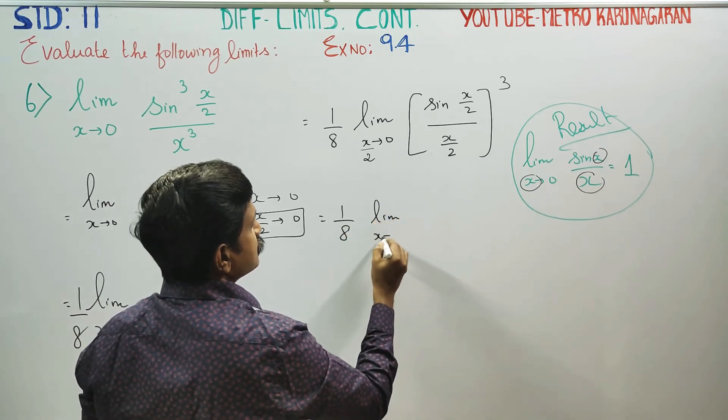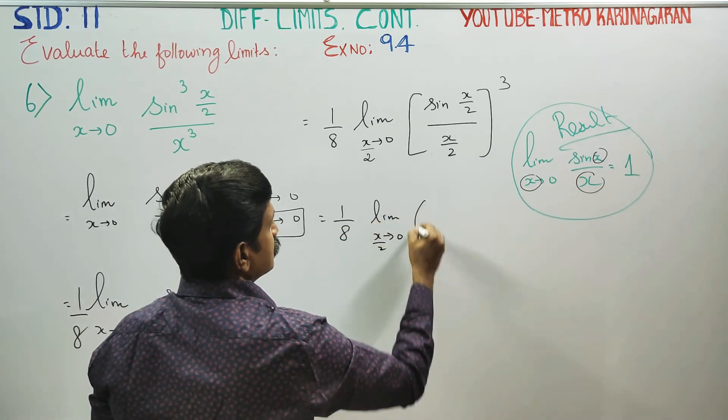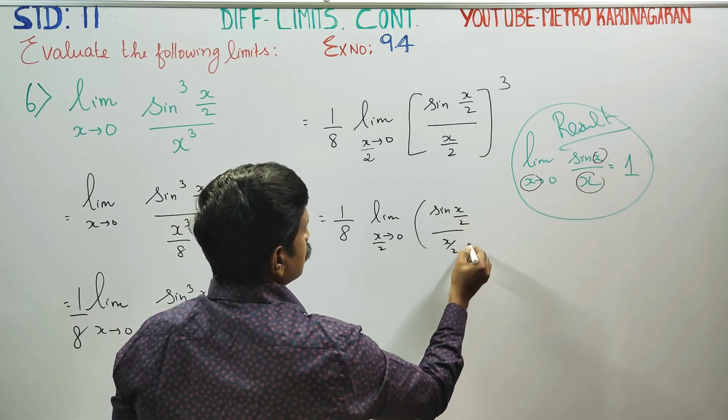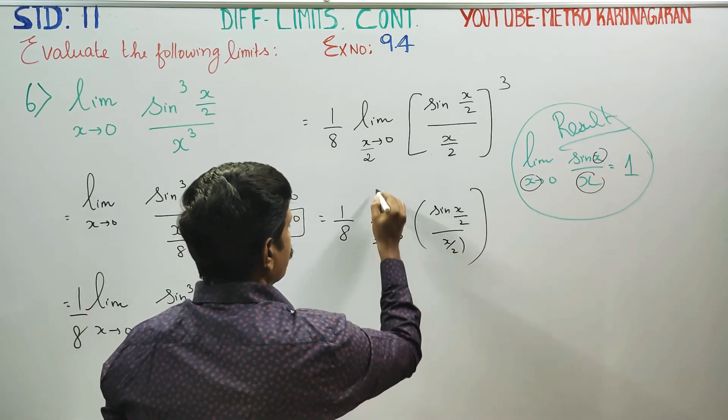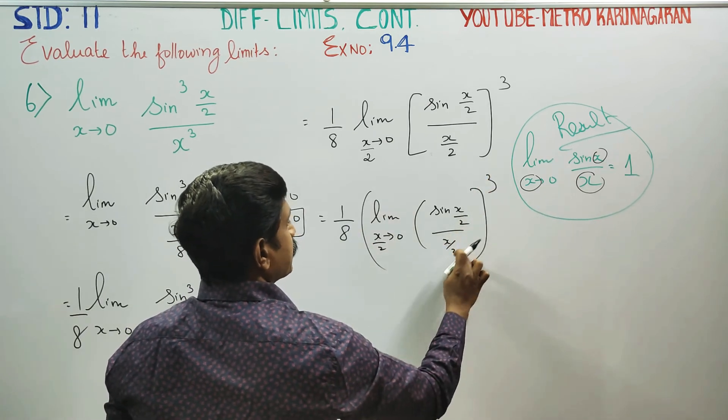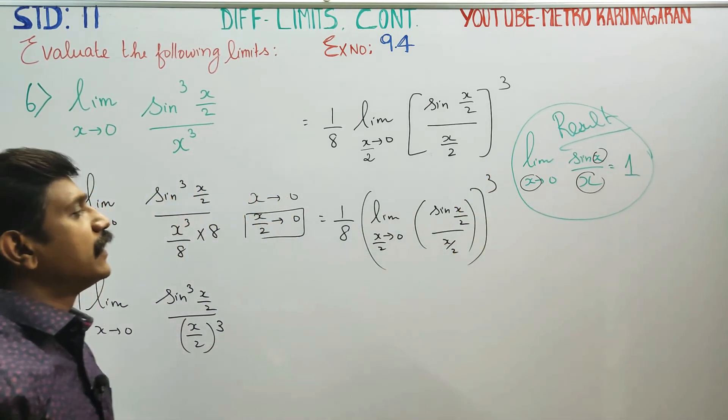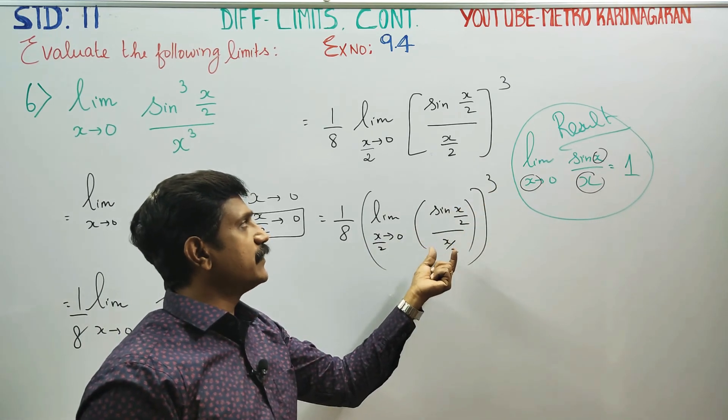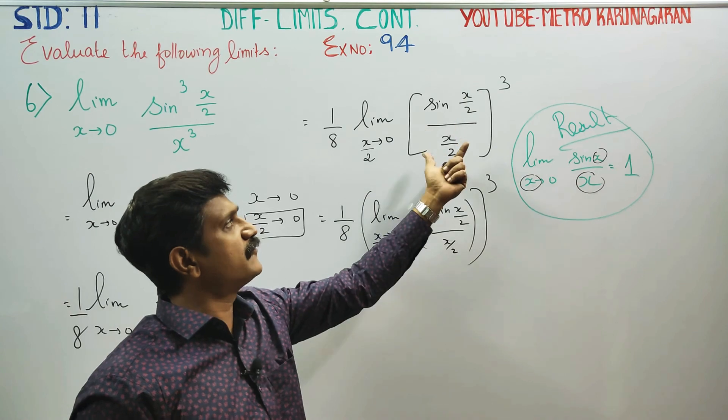Limit x turns to 0, x/2 turns to 0: [sin(x/2) divided by x/2] whole cube. Then limit to the value of cube. Limit is 1, apply to the cube, 1 cubed is 1.